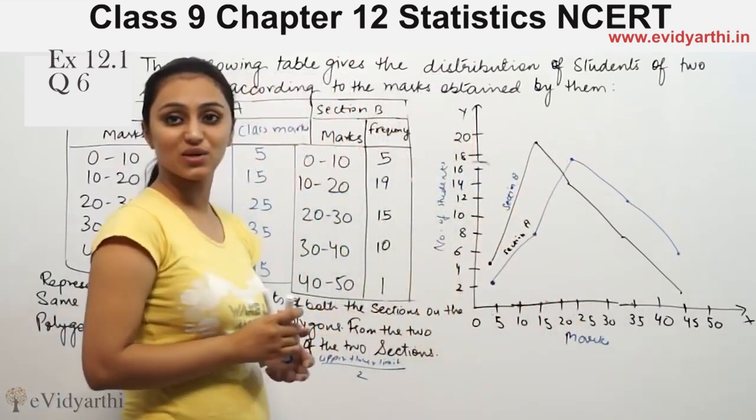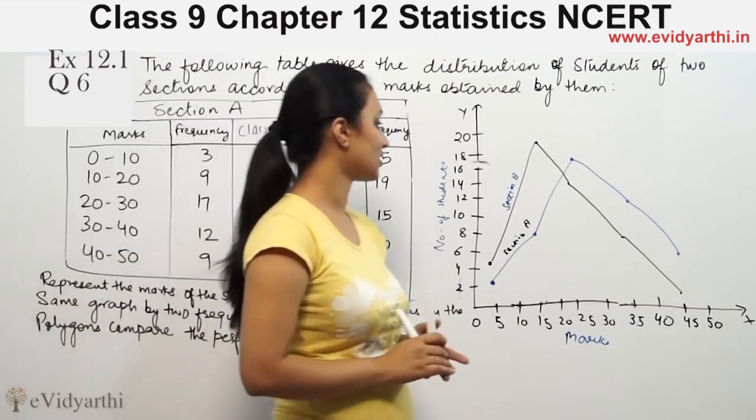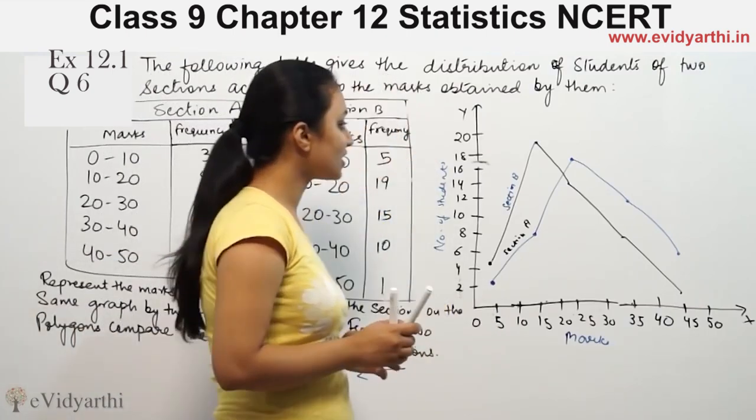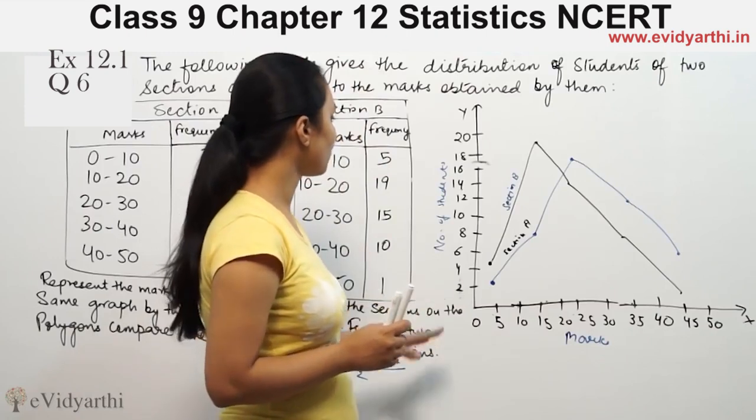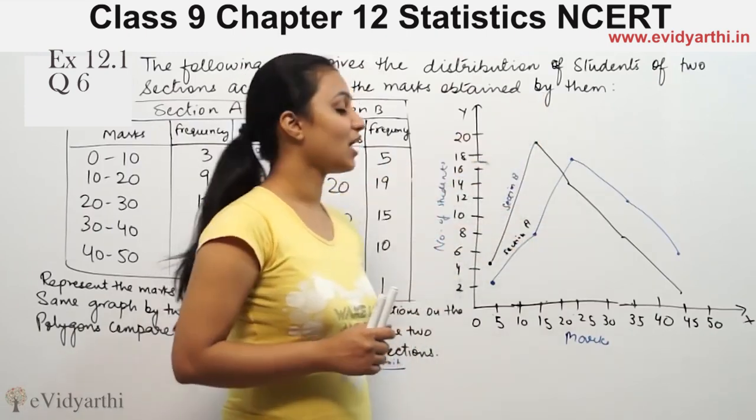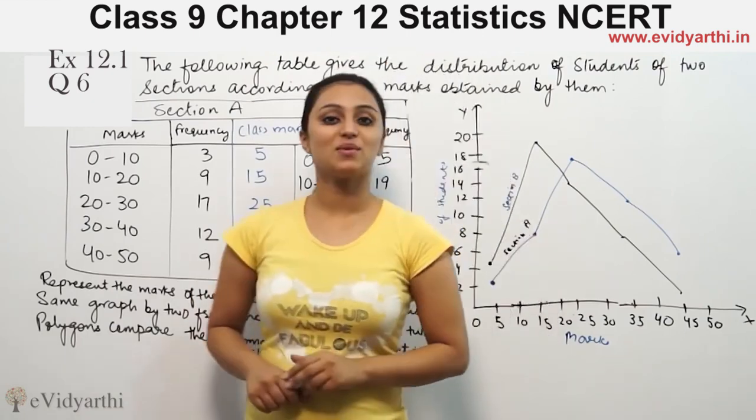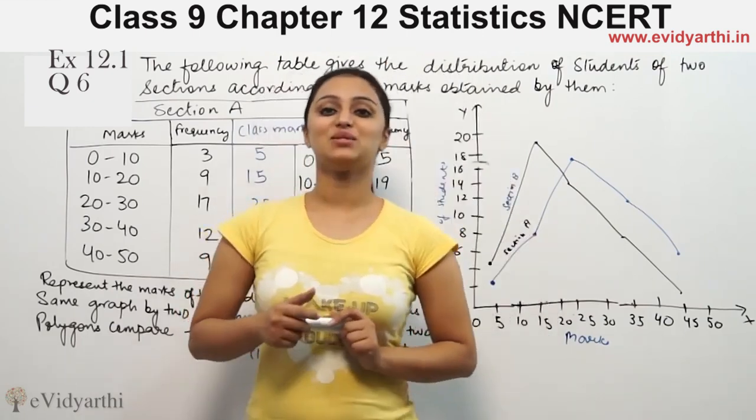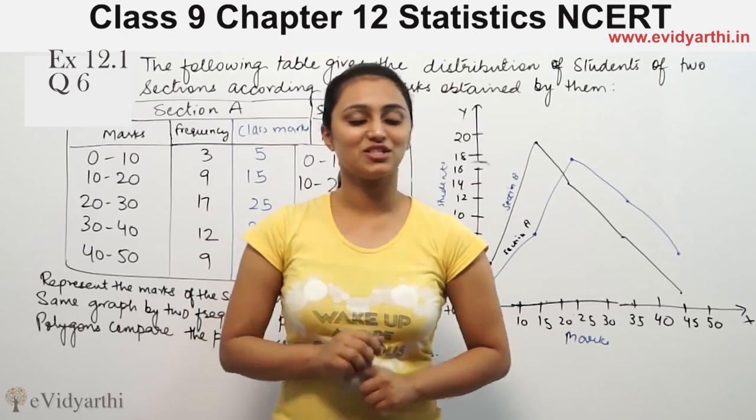These are the frequency polygons for the two sections that you can compare. This was question 6 from exercise 14.3. Watch the next video for more questions. Goodbye.